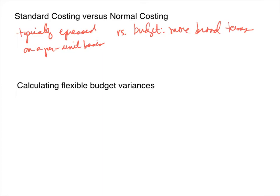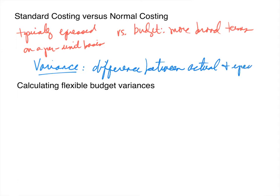When we talk about a standard, we think about this as what we should have paid — for example, the labor rate we should have paid per hour, or how much per unit we should have paid for our materials. In standard costing, we compare what we budgeted to happen versus what actually happened, and because these two things are almost never equal, we call that difference a variance.